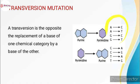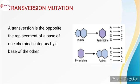In transversion: A is replaced by C, A is replaced by T, G is replaced by C, G is replaced by T — and the reverse cases as well. To summarize: purine replacing purine, or pyrimidine replacing pyrimidine, is transition mutation. Purine replacing pyrimidine, or pyrimidine replacing purine, is transversion mutation. I hope this video lesson has made the base substitution mutation concept clear. Thank you so much for watching. If you liked this video, please like it, share it, and subscribe.